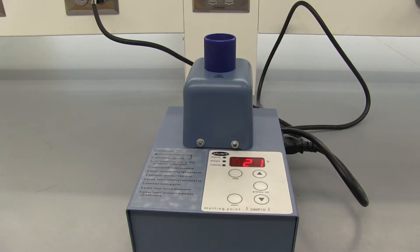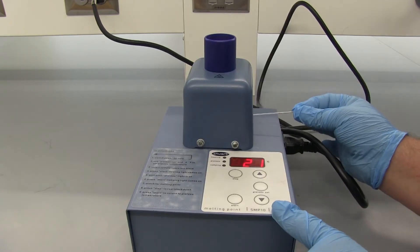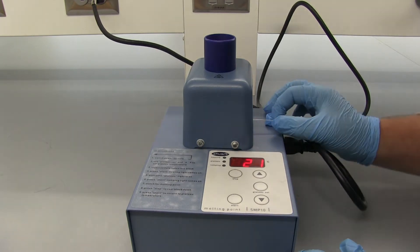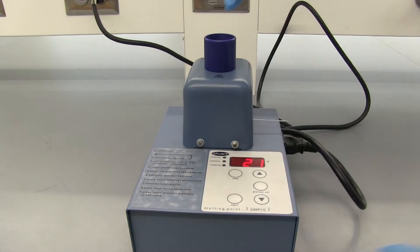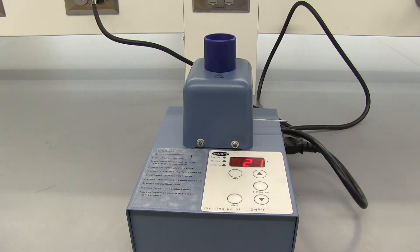We're going to put in our melting point tube and you'll be able to see it through the hole here. There'll be two grooves and a light that helps you see it. Look through the hole there.